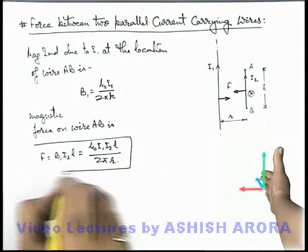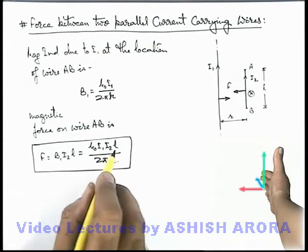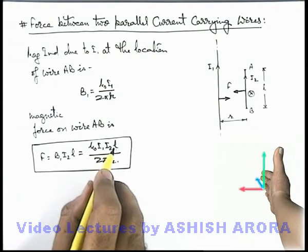This is the expression for magnetic force between the two wires separated by distance r, and one wire should be very long, the other should be of length l.